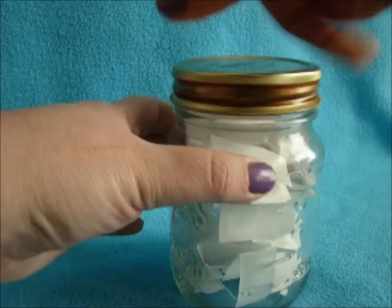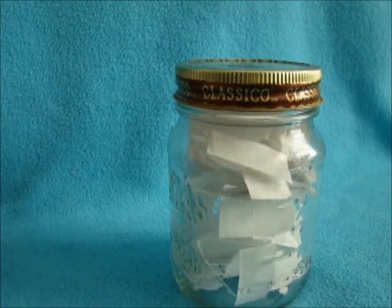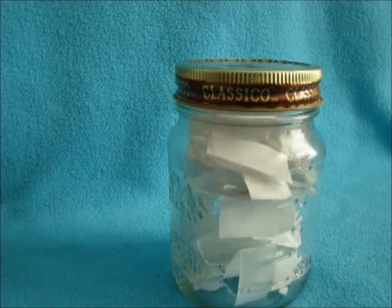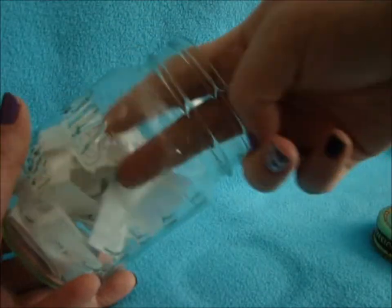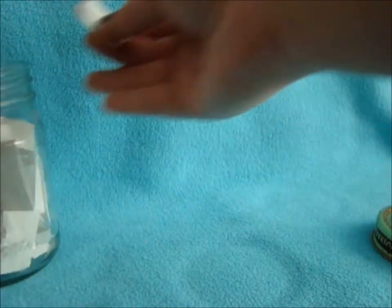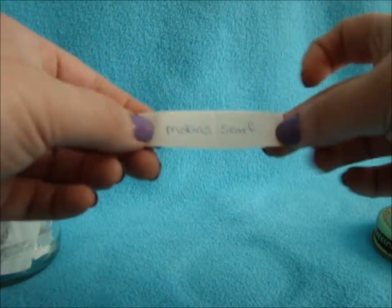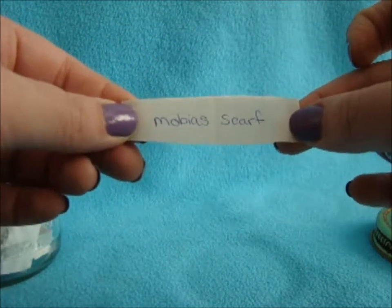Then once you have it all full, you're going to place on your lid or close your box. And when it comes time to picking a project, you'll take your box, shake your ideas around. Then you're going to randomly draw out a slip of paper. And now you have your next project.